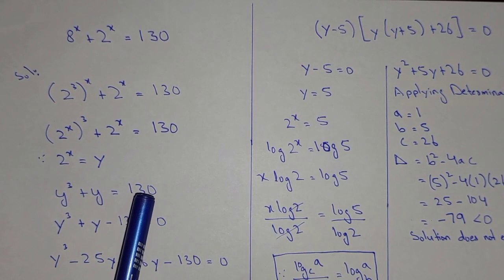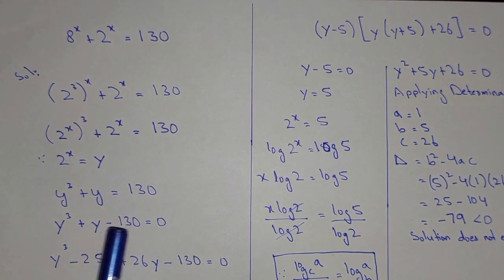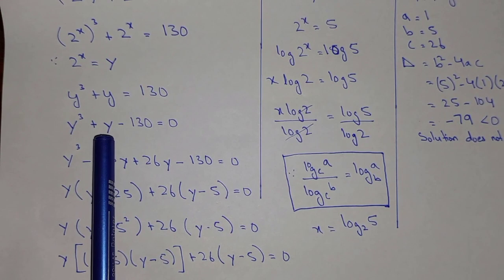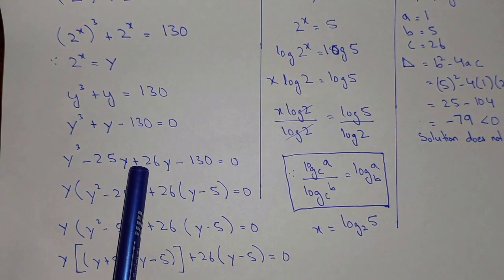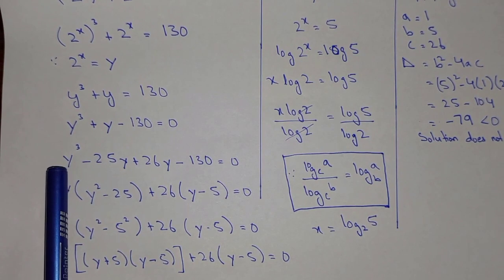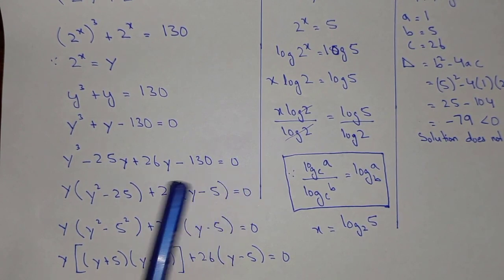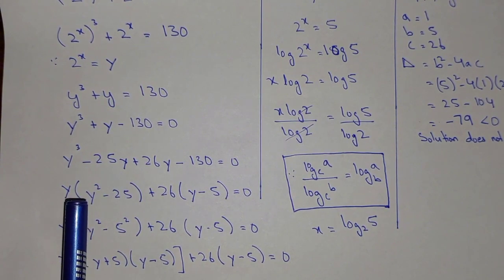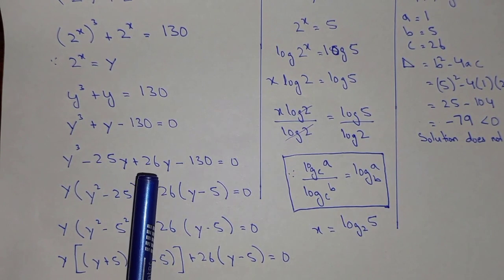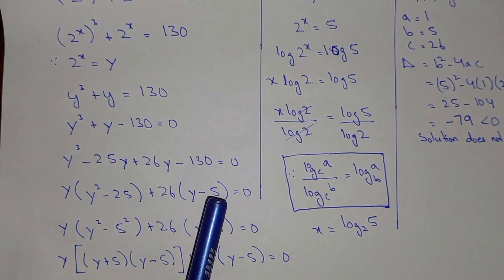So we can write it as y cubed plus y equal to 130. Bringing 130 to the left-hand side, the sign will change: y cubed plus y minus 130 equals 0. Now we can write y as minus 25y plus 26y, because 26 minus 25 equals 1. So: y cubed minus 25y plus 26y minus 130 equals 0.